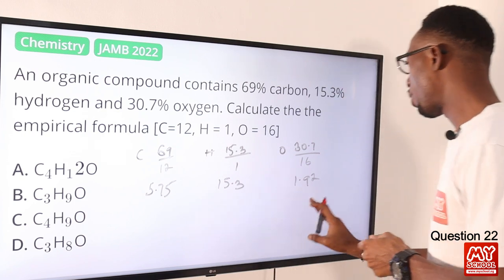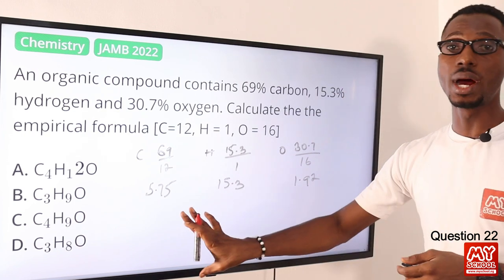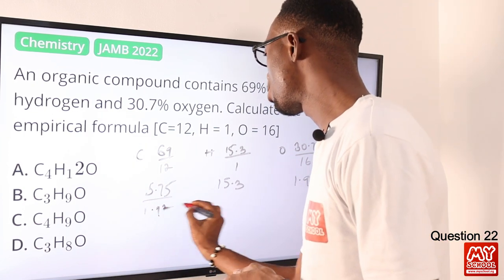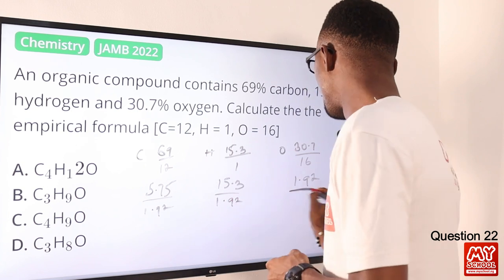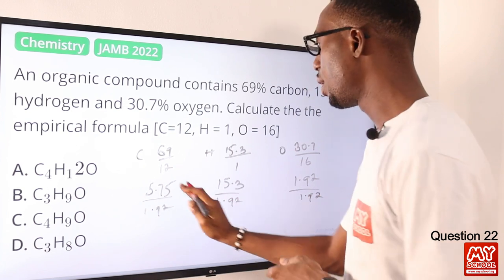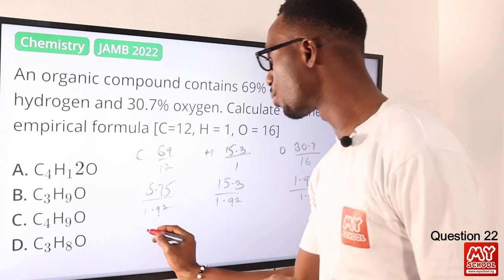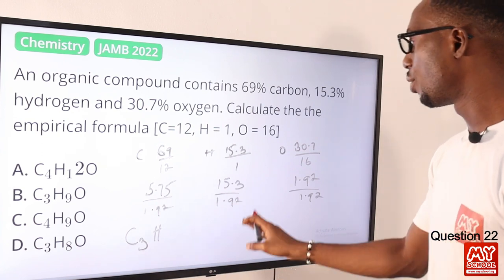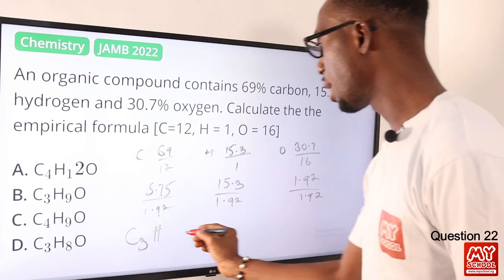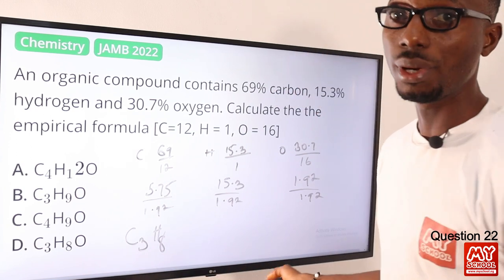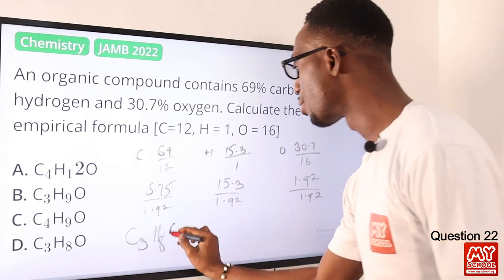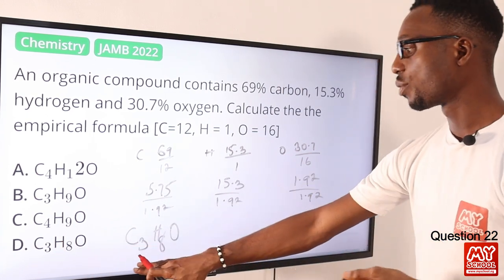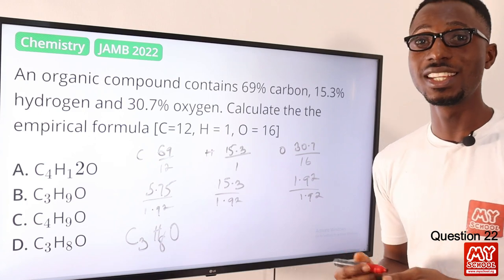So what we just need to do at this point is to divide by the smallest value, and the smallest value here is actually 1.92. So if we divide 1.92 into each value, roughly I should have 3 for carbon. Then for hydrogen, I should have it somewhat around 8. Then oxygen divided by 1.92 is 1. So this is the empirical formula, and we can find that in option D. So option D is the right option.